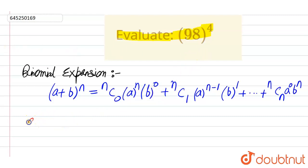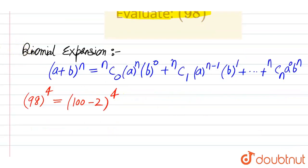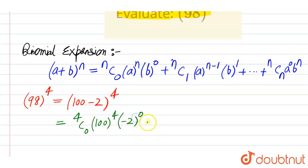We will write 98 to the power 4 as equal to (100 minus 2) to the power 4. So this is equal to 4C0 into 100 to the power 4 into minus 2 to the power 0, plus 4C1 into 100 to the power 3 into minus 2 to the power 1.